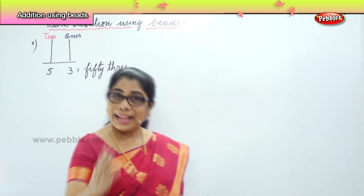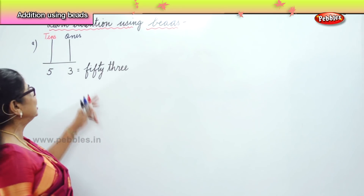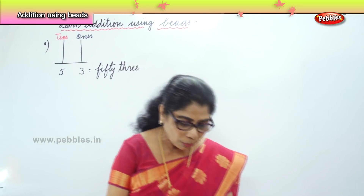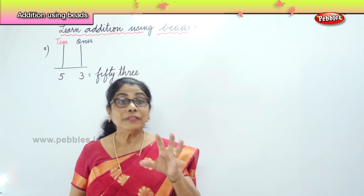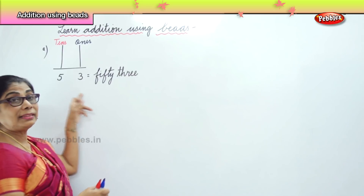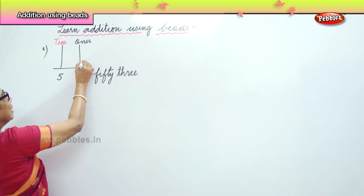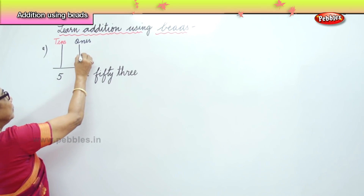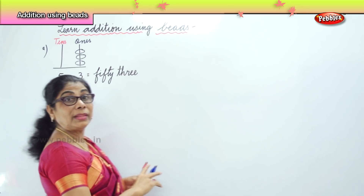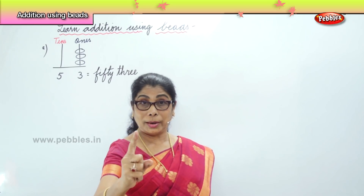Now, how do we add? We got 53 here. What is the meaning of 53? Let's talk about what is 50? 50 and 3. Now, ones place: 3 is in the ones place. Look at me, I am going to put 3 beads here. 1, 2, and 3. In the ones place, we are talking about 1, 1, 1, 1.